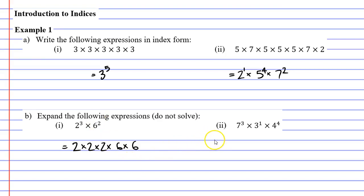In the second part of B, you'll notice that we've got three 7s, so: 7 times 7 times 7. I've only got one 3. And I've got four 4s: 2, 3, 4.